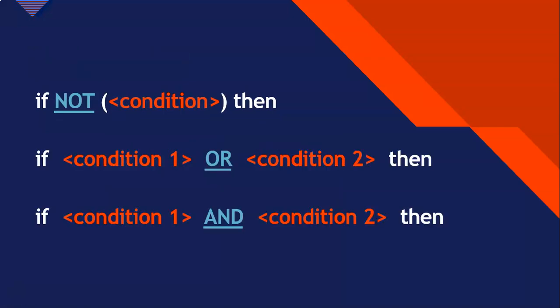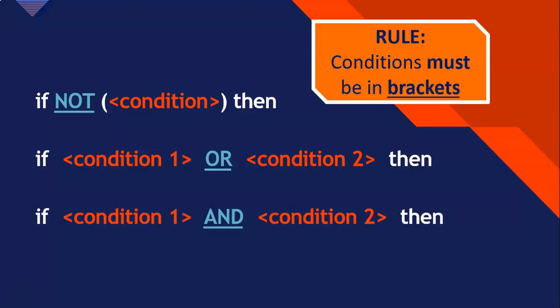Whenever we have conditions with the OR and AND operator, there's a special rule: there must be brackets around your conditions. If you don't have brackets, it's going to give you a syntax error. So wherever you have your conditions, you must put brackets around them when you use the AND and OR operators.